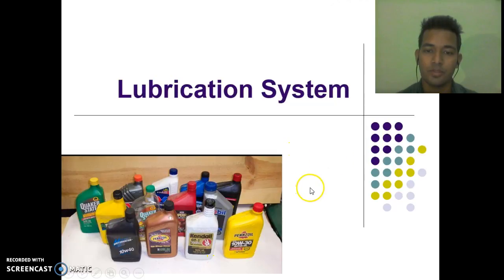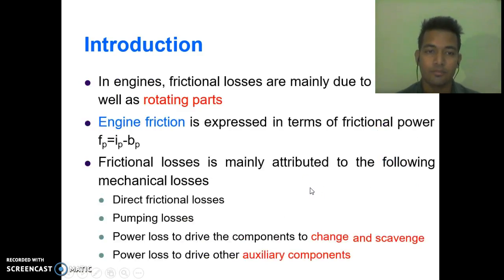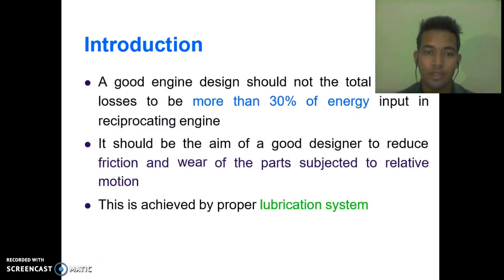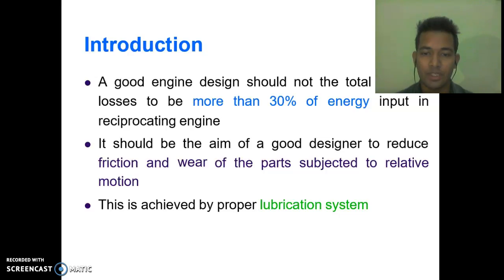Now let's discuss some examples. In engines, frictional losses are mainly due to sliding as well as rotating parts. Engine friction is expressed in terms of frictional power, i.e. FP = IP − BP. Frictional losses are mainly attributed to direct frictional losses, pumping losses, power loss to drive components to charge and scavenge, and power loss to drive other auxiliary components. A good engine design should not allow total frictional losses to exceed 30% of energy input in a reciprocating engine. It should be the aim of a good designer to reduce friction and wear of parts subjected to relative motion, which is achieved by a proper lubrication system.